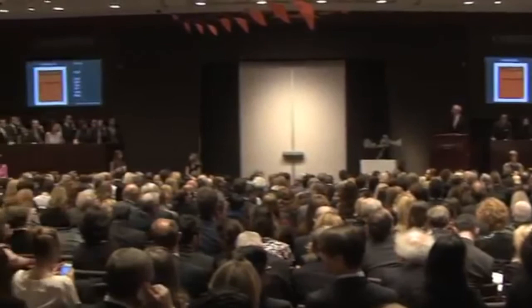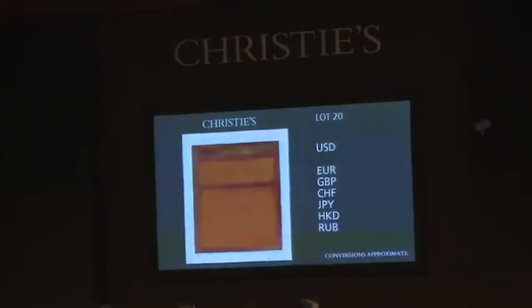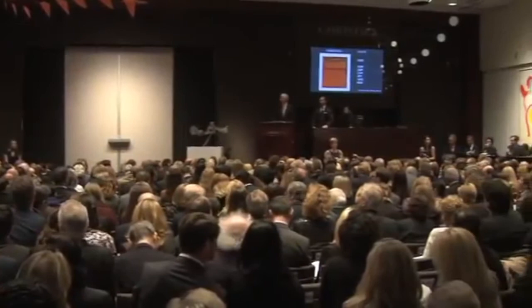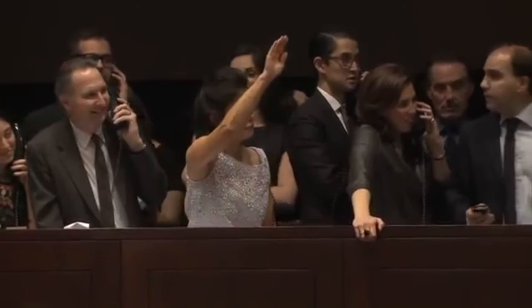Lot 20 is the Mark Rothko — Orange, Red, Yellow from 1961. Bidding starts at $24 million, quickly climbing through $25, $26, $27, $28, $29, $30, $31, $32, $33, $34, $35, $36, $37 million — then jumps to $40 million with four bidders in contention.